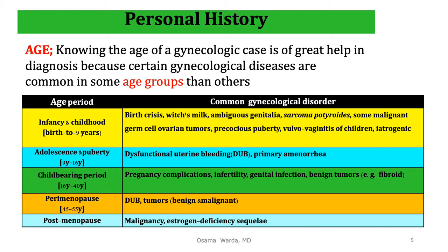The second item in personal history is age. Knowing the age of a gynecologic case is of great help in diagnosis because certain gynecological diseases are more common in some age groups than others. For example, in the age group from delivery to nine years — infancy and early childhood — common gynecologic disorders include vulvovaginitis and ambiguous genitalia.